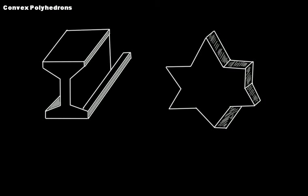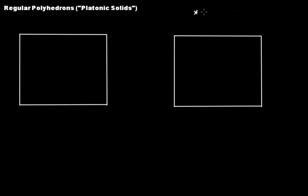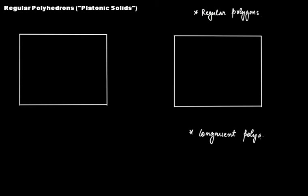After we have discussed what are convex polyhedrons, let's talk about regular polyhedrons. To understand the concept of regular polyhedrons, you should know what are regular polygons and what are congruent polygons. These two concepts we have studied in grade 7 geometry, but let's discuss it real quick.